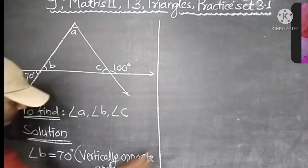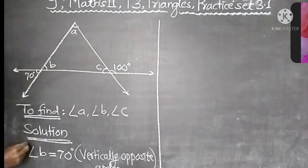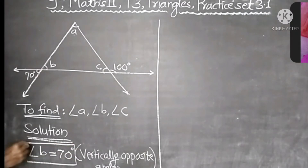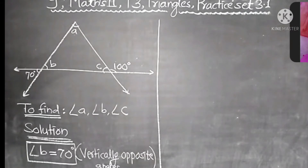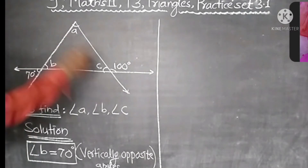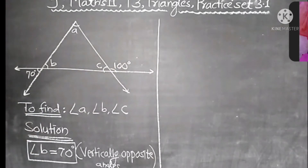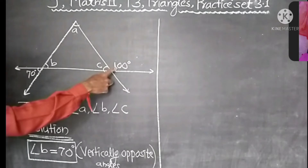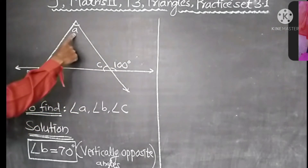If we find the measure of Angle B and the measure of Angle A, we can find the measure of Angle B and Angle C. Angle C is equal to the sum of their remote interior angles.